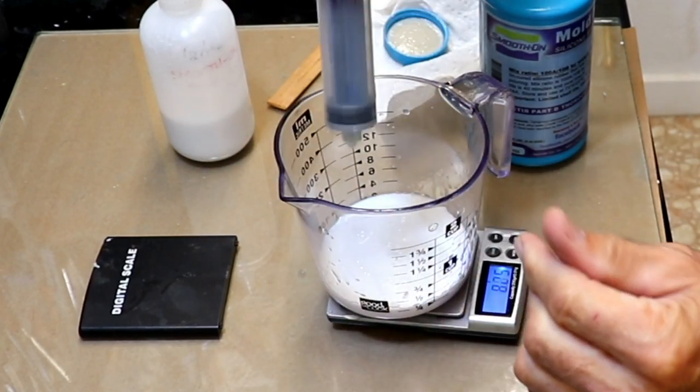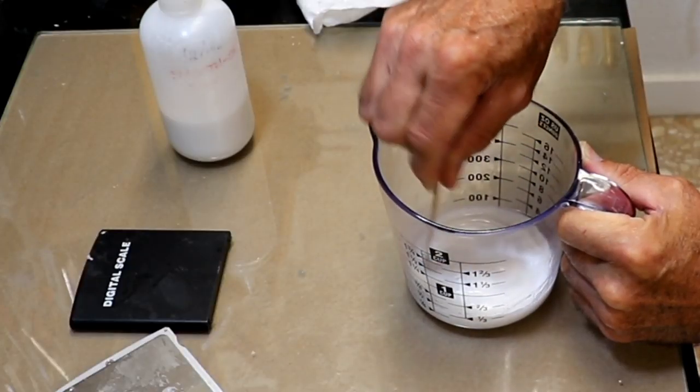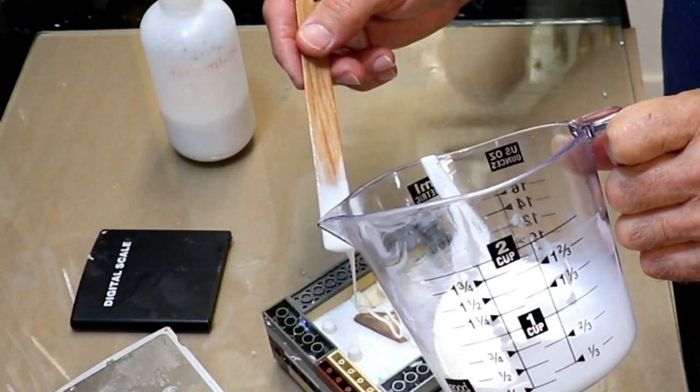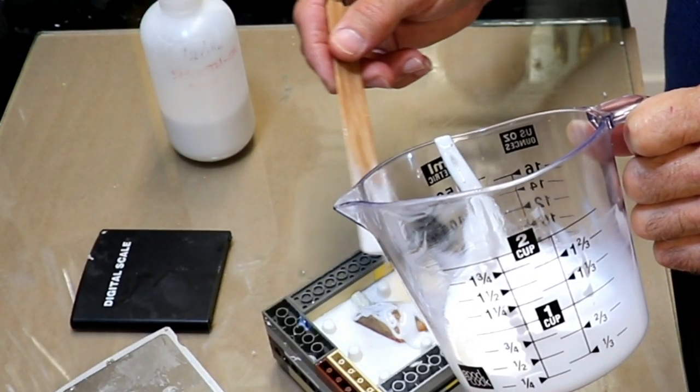Now I need 10 percent so that's 7 milliliters and I'm just checking it by eye and now I'm introducing it to the silicone.